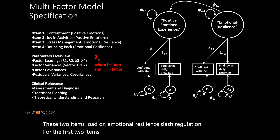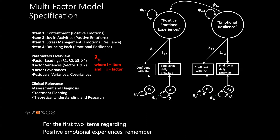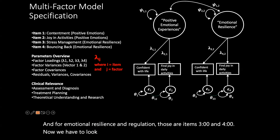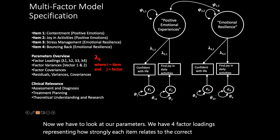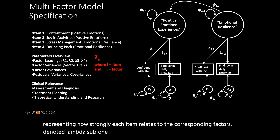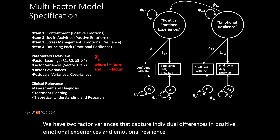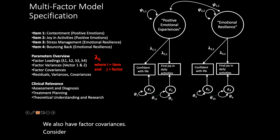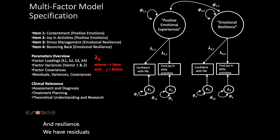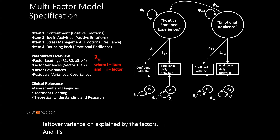Items one and two relate to positive emotional experiences, and items three and four relate to emotional resilience and regulation. We have four factor loadings denoted lambda sub one through lambda sub four. We have two factor variances that capture individual differences in positive emotional experiences and emotional resilience. We also have factor covariances, considering correlations between the factors, such as the link between positive emotions and resilience. We have residuals — the variances and covariances — covering leftover variance unexplained by the factors.